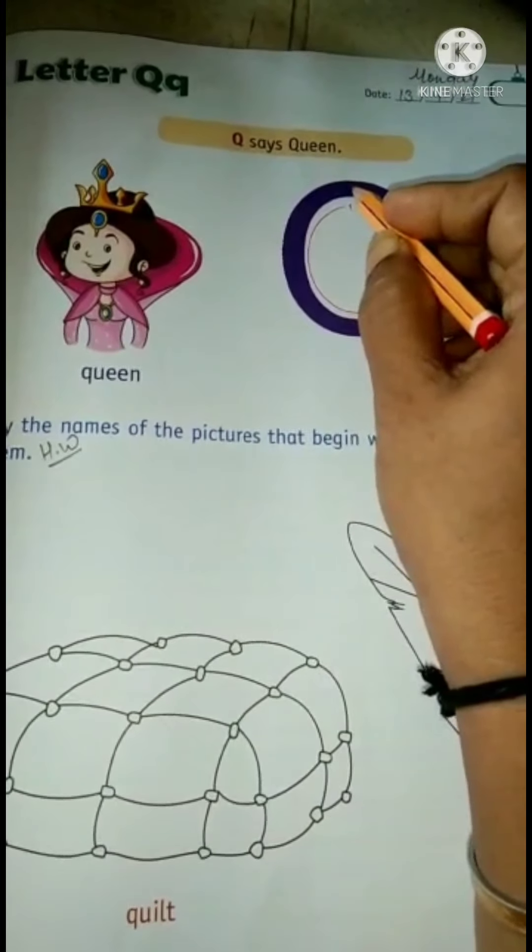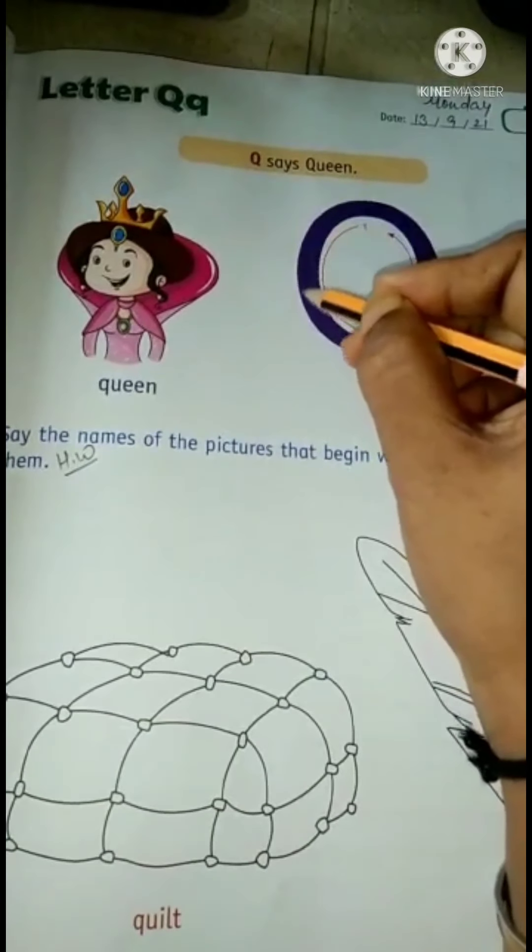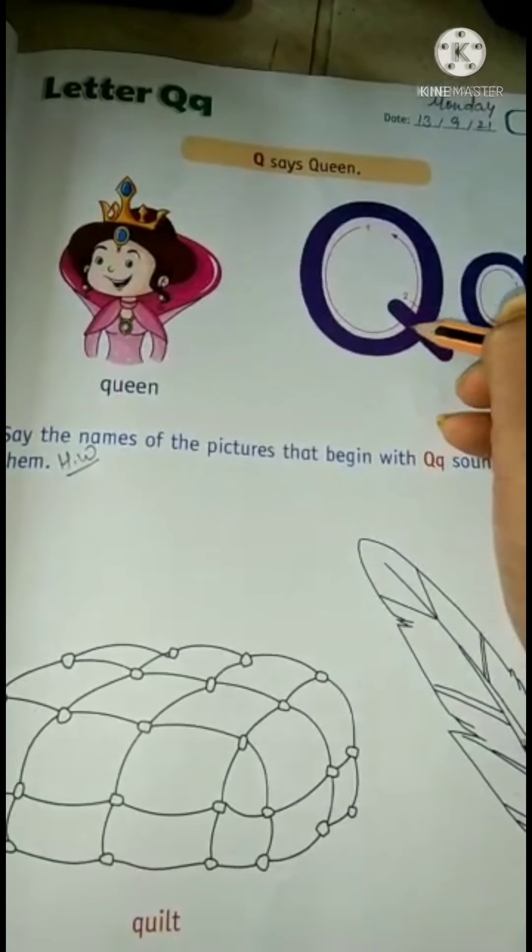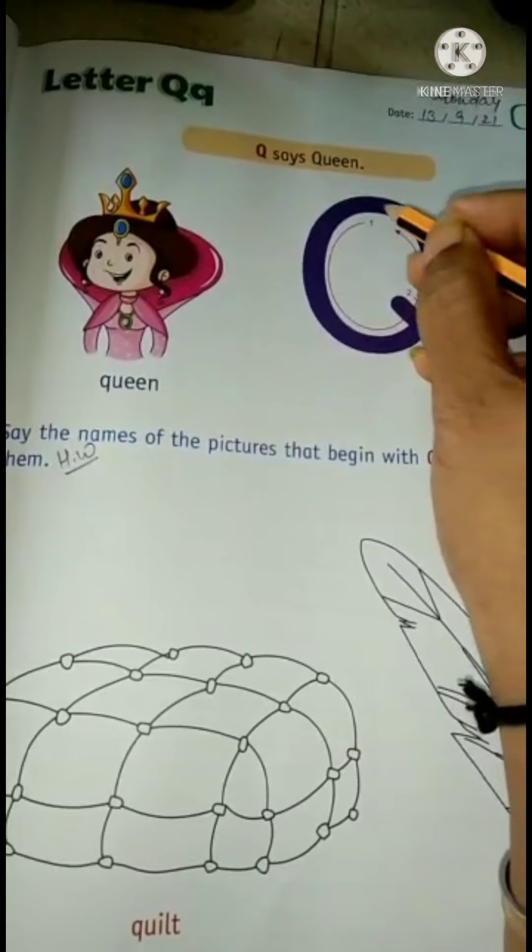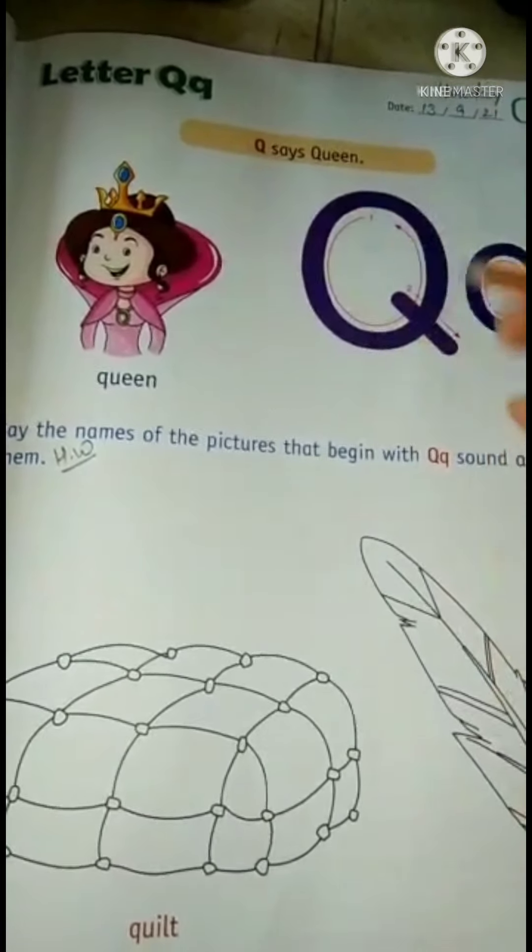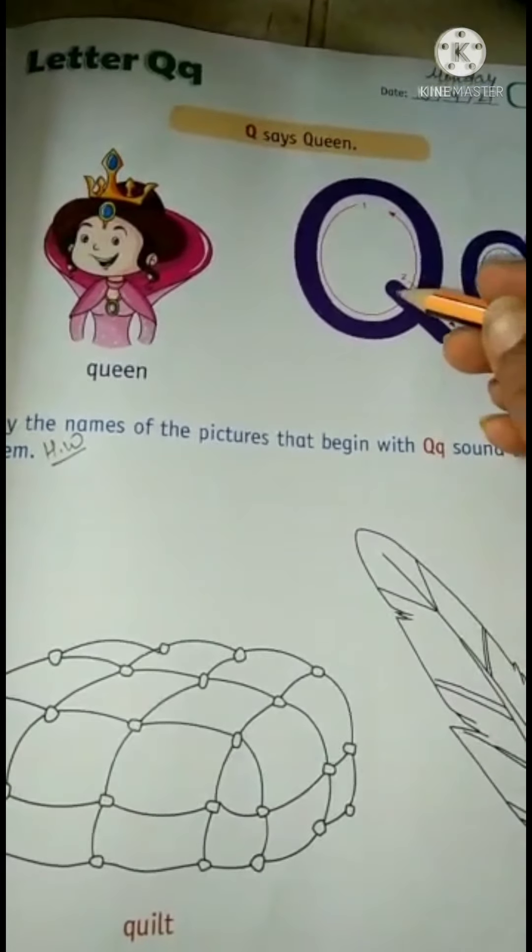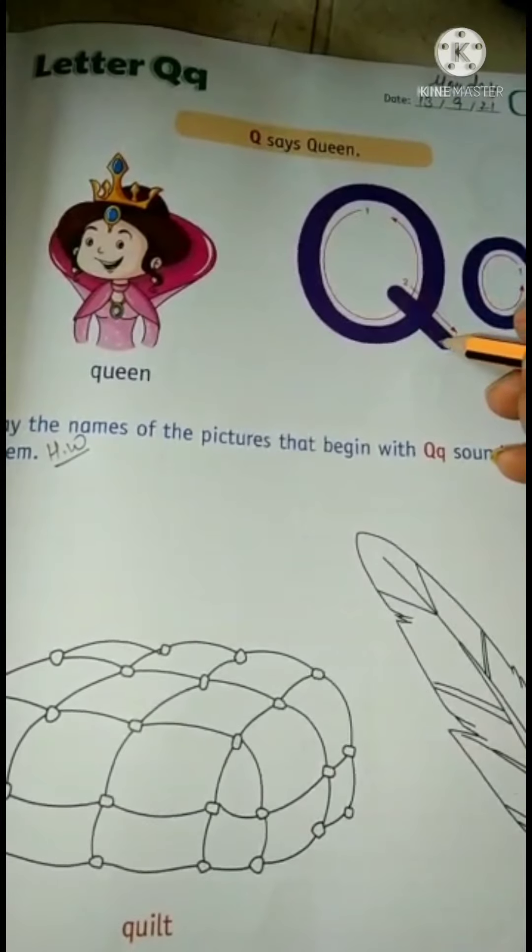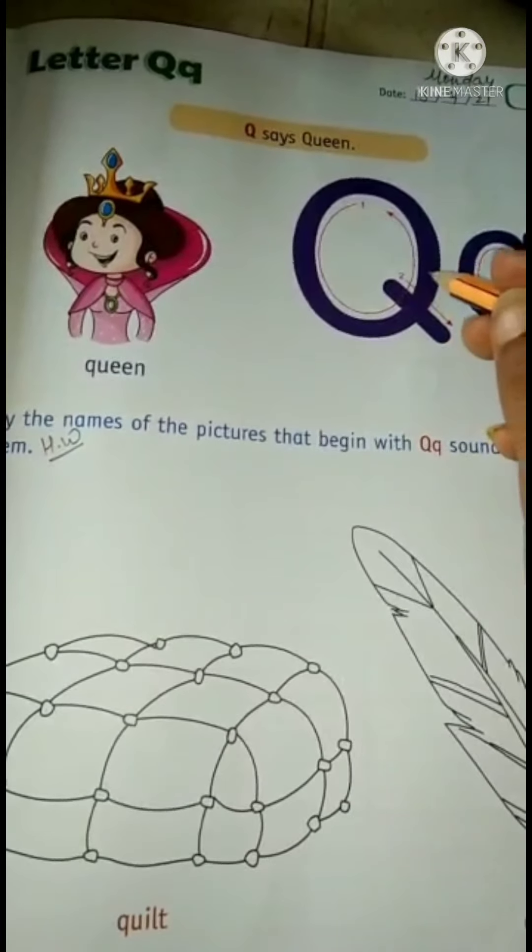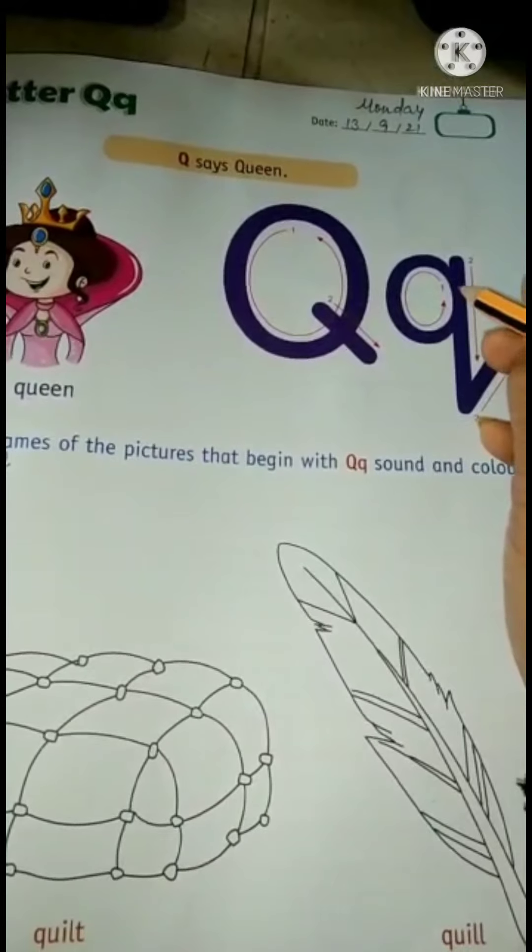We will start from the top. Give a curve to left, and then come to the right and end it. Draw one circle. Now one slanting line to the bottom. It's capital letter Q.